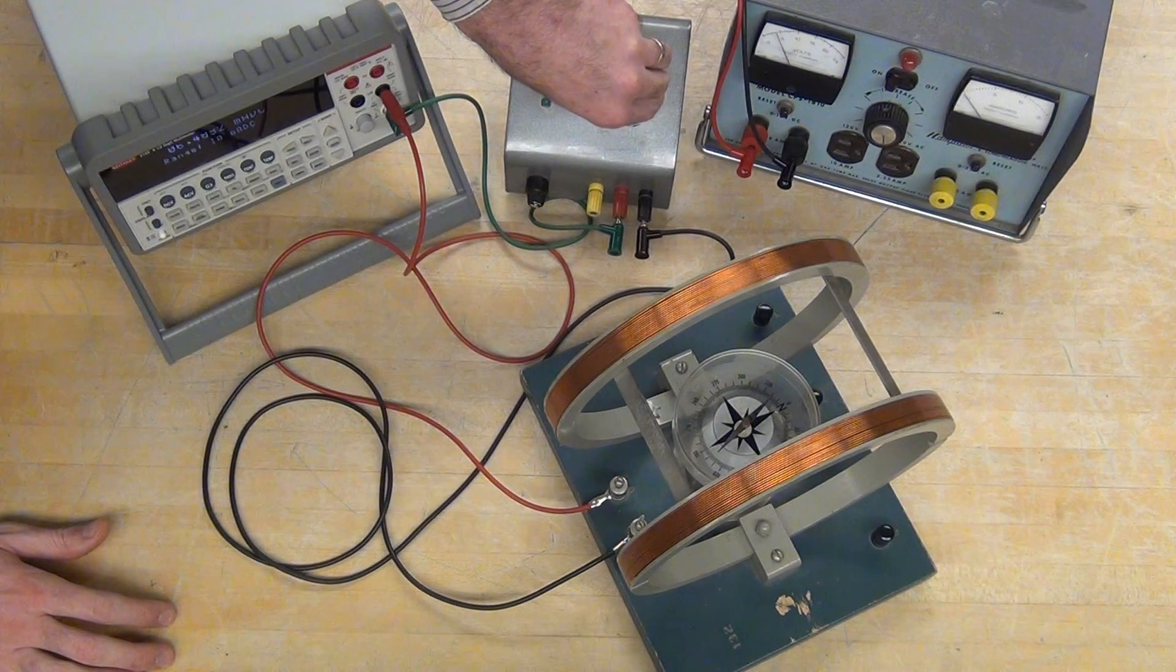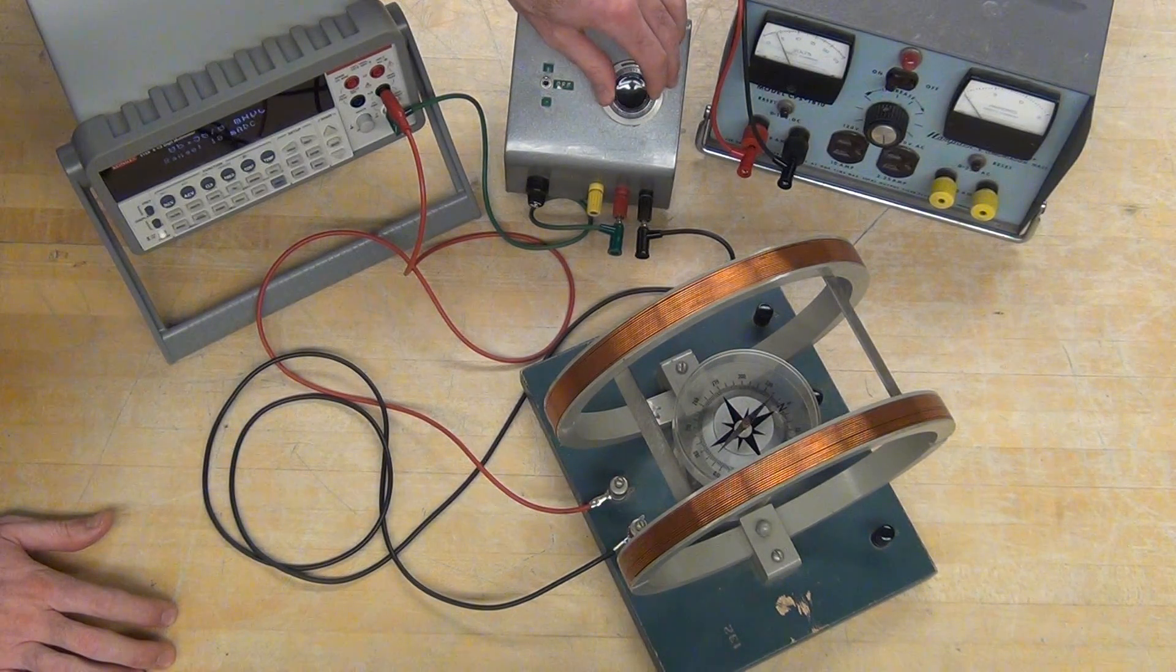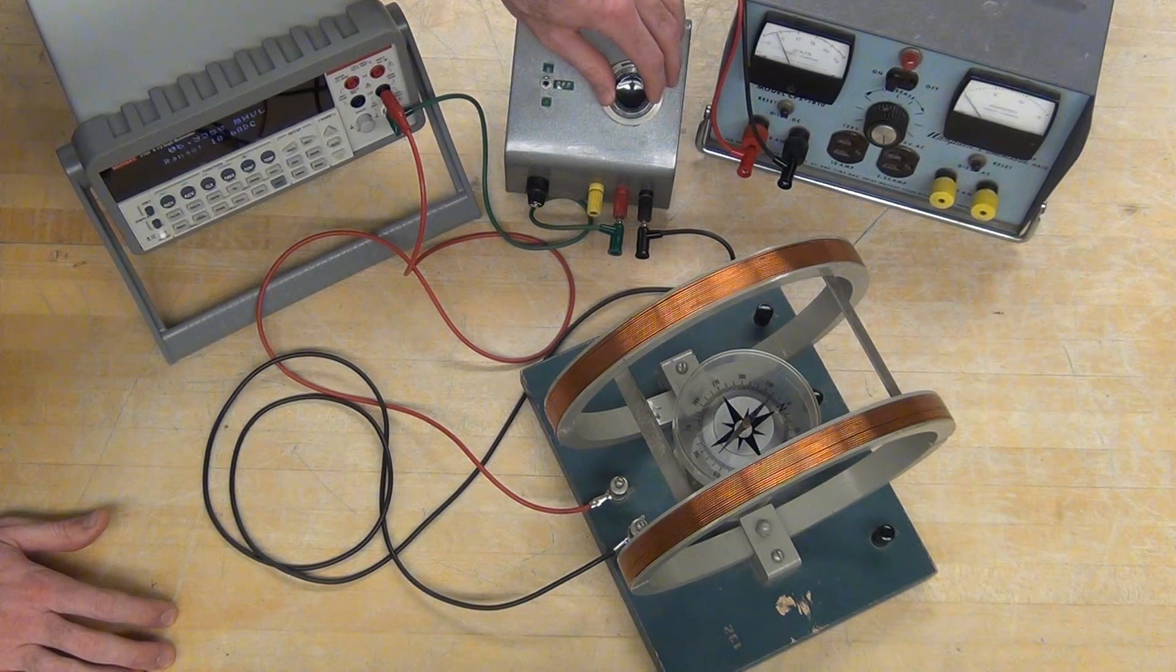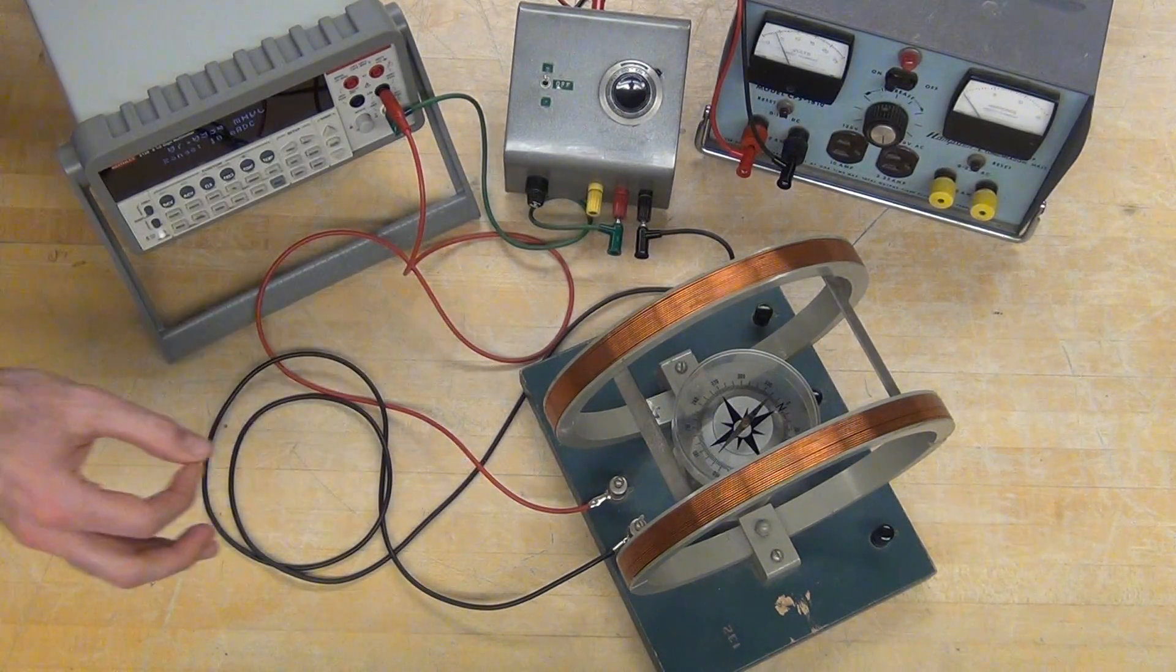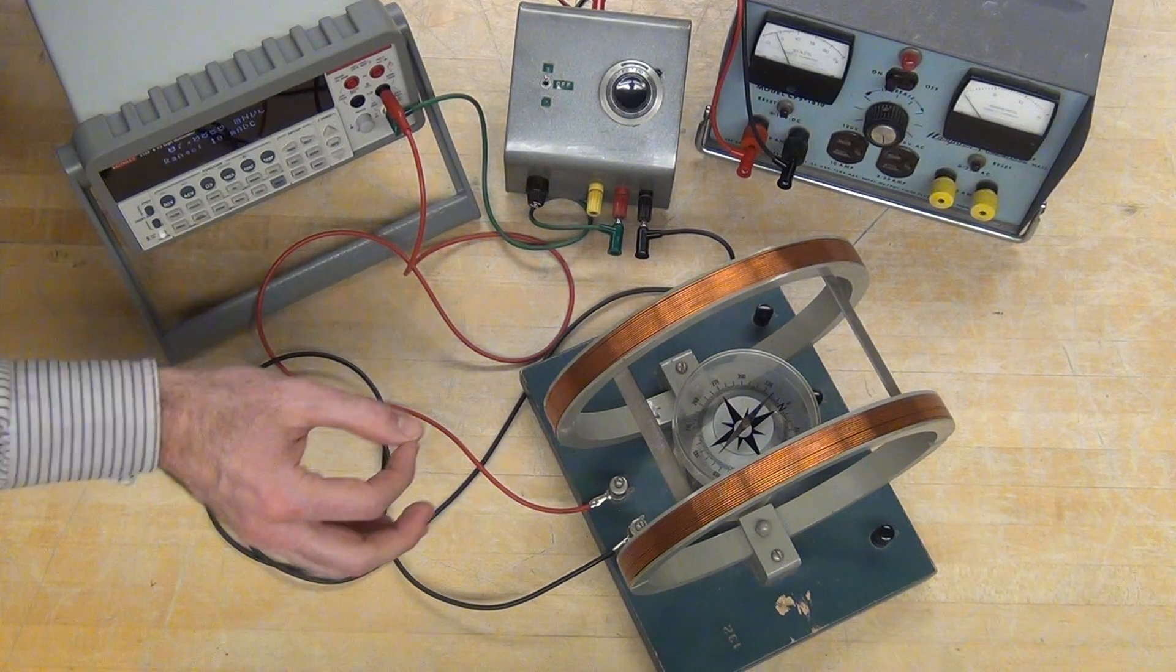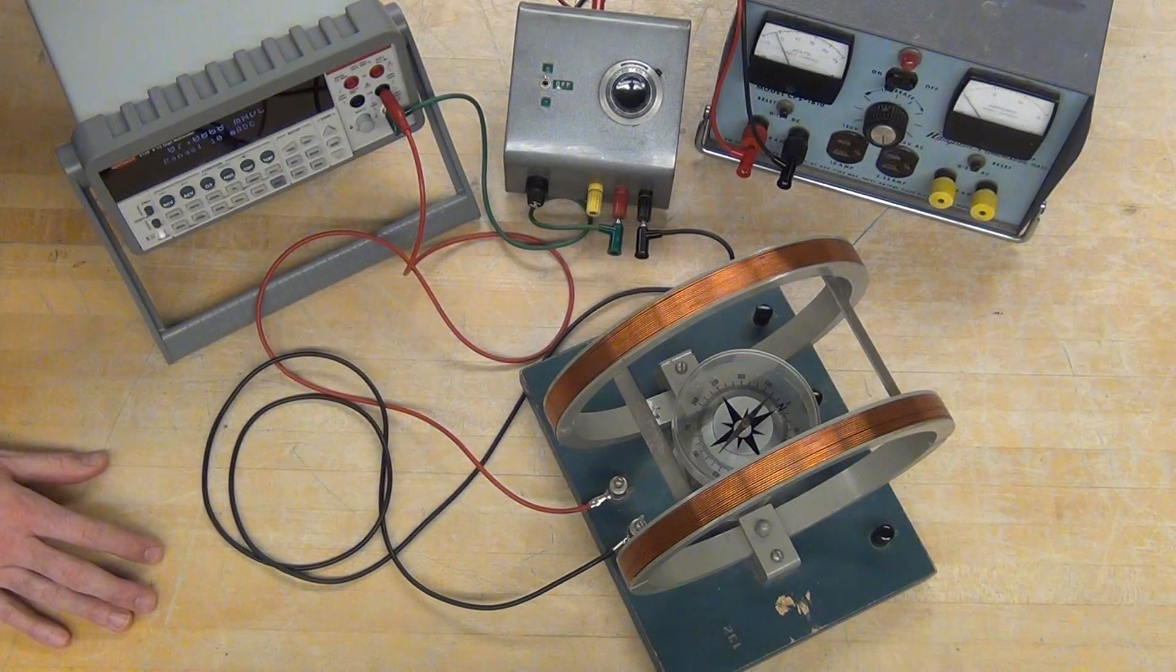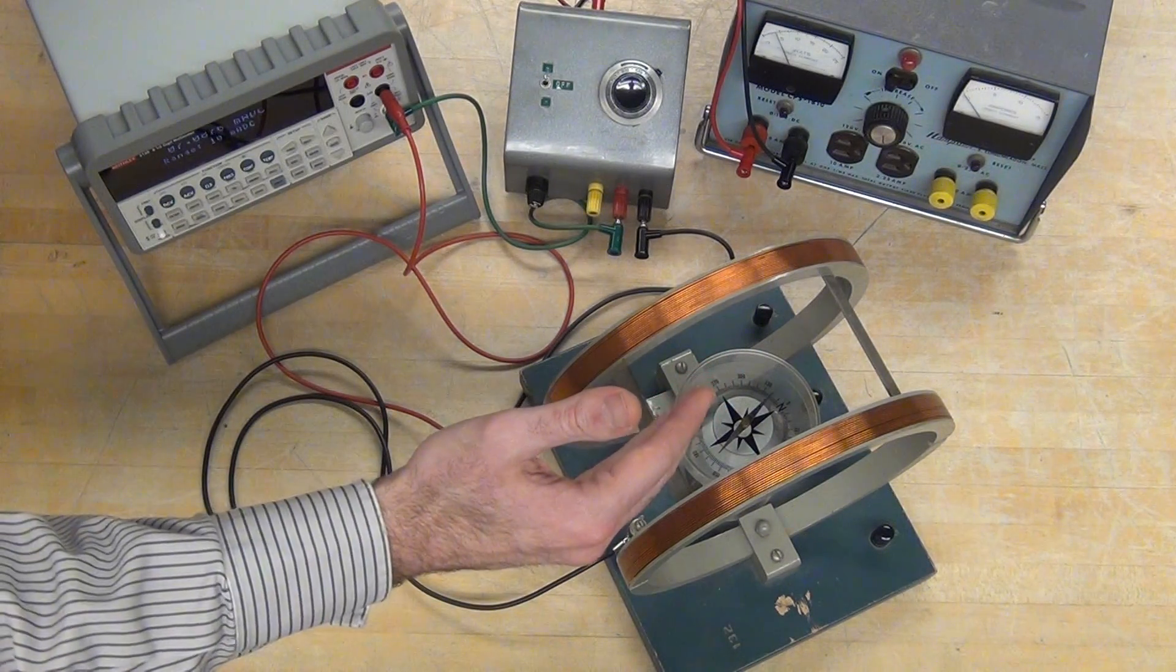Seeing that deflection in the needle. Again, you can use the ruler there if you want to get a more accurate line you're shooting for, plus or minus a degree in terms of how well you've aligned it. You'll measure the angle, you'll measure the current.